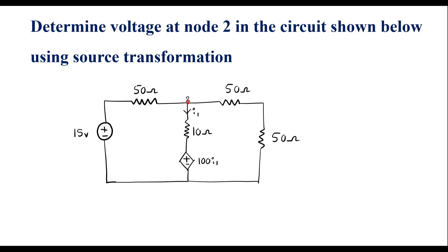Voltage at node 2 is nothing but voltage across the 10 ohm resistor plus 100·I1. Here 100·I1 is a current-dependent voltage source, dependent on current I1, where I1 is flowing through the 10 ohm resistor. We are supposed to calculate voltage at node 2 using source transformation.